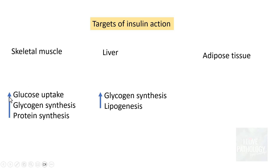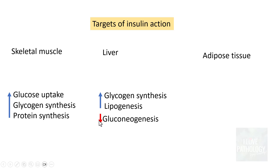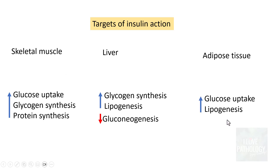In skeletal muscle, insulin causes an increase in glucose uptake, increase in glycogen synthesis, and increase in protein synthesis. In the liver, there is increase in glycogen synthesis and lipogenesis, and notably a decrease in gluconeogenesis. In adipose tissue, it results in glucose uptake, increases lipogenesis, but decreases lipolysis.